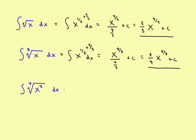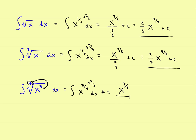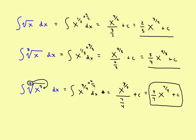Now let's try the fourth root of x cubed. First, change it into fractional form: take the root and move it to the denominator, giving you x to the 3 fourths power. Now increase the power by 1 — add 4 fourths. So 3 fourths plus 4 fourths gives 7 fourths. That becomes x to the 7 fourths, divided by 7 fourths, plus c. Take the denominator, change it to multiplication, and the final answer is 4 sevenths times x to the 7 fourths, plus c. Whatever the root is, move it to the denominator to get the fractional exponent.